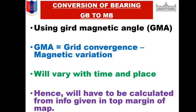Conversion of bearing: Grid Bearing to Magnetic Bearing. Grid Bearing — remember, grid means map (naqsha) — the angle on the lines of the map is called Grid Bearing. Magnetic Bearing is taken with compass. To convert between them, we use GMA — Grid Magnetic Angle — also called Grid Convergence. GMA equals Grid Convergence minus Magnetic Variation. Magnetic variation and grid convergence are different values that change with time and place.